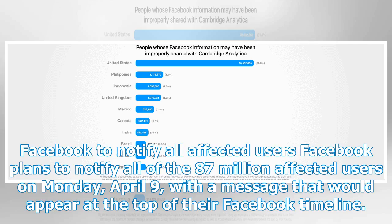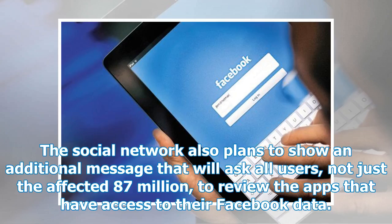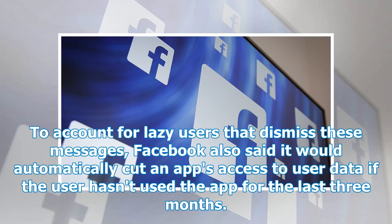Facebook plans to notify all of the 87 million affected users on Monday, April 9, with a message that would appear at the top of their Facebook timeline. The social network also plans to show an additional message that will ask all users, not just the affected 87 million, to review the apps that have access to their Facebook data. Facebook also said it would automatically cut an app's access to user data if the user hasn't used the app for the last three months.